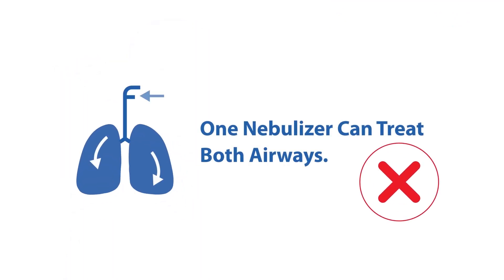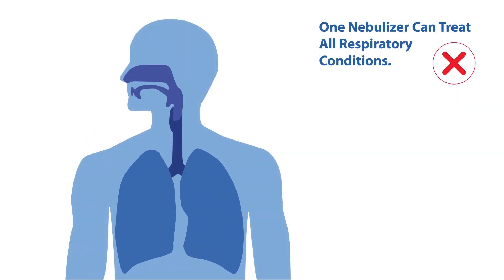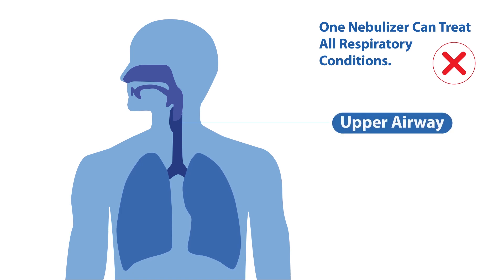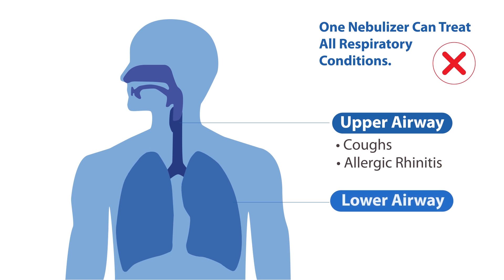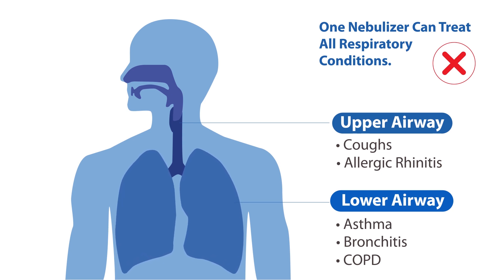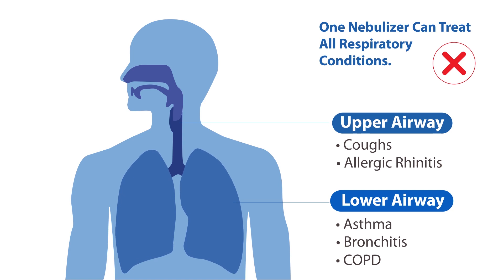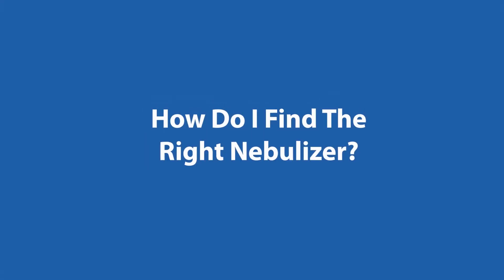Not every nebulizer comes with the capability to target both airways. Respiratory conditions are largely divided into two types: upper airway conditions such as cough and allergic rhinitis, and lower airway conditions such as asthma, bronchitis, and COPD. Some nebulizer models have the added feature to adjust the particle size they produce. Select your nebulizer based on your respiratory condition.